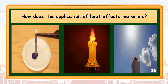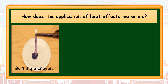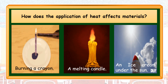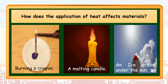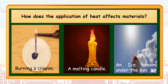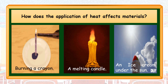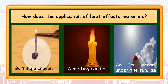Let's try to observe and investigate this first set of illustrations. What do you think they have in common? These three examples show the presence of heat. The three exhibit changes in their physical appearance as heat is applied on the material. Therefore, burning a crayon, melting a candle, and an ice cream under the sun are examples of physical change with the application of heat. Can you give some examples that show physical change with the application of heat?